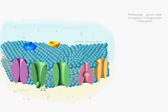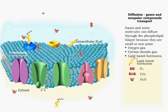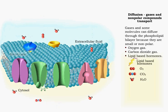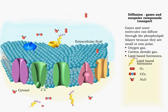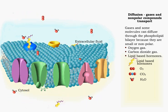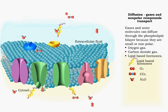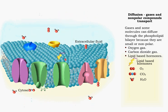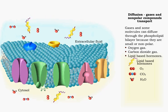Gases and non-polar molecules pass through the bilayer along their concentration gradients in the process of diffusion. Ions and glucose cannot pass through the phospholipid bilayer.